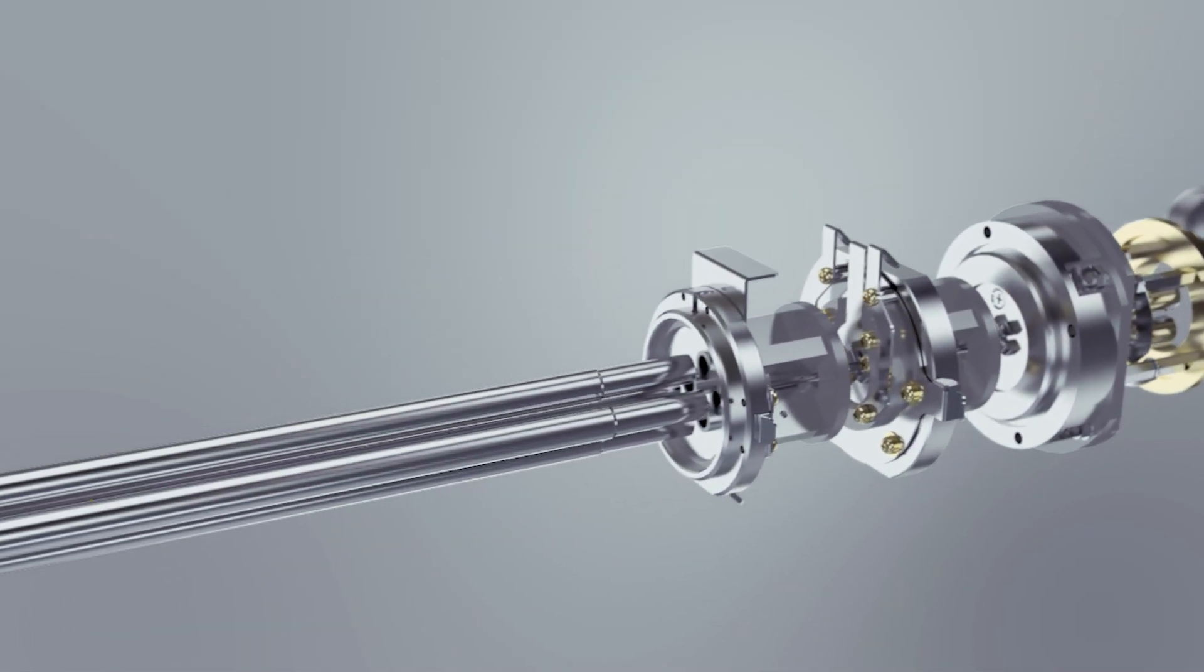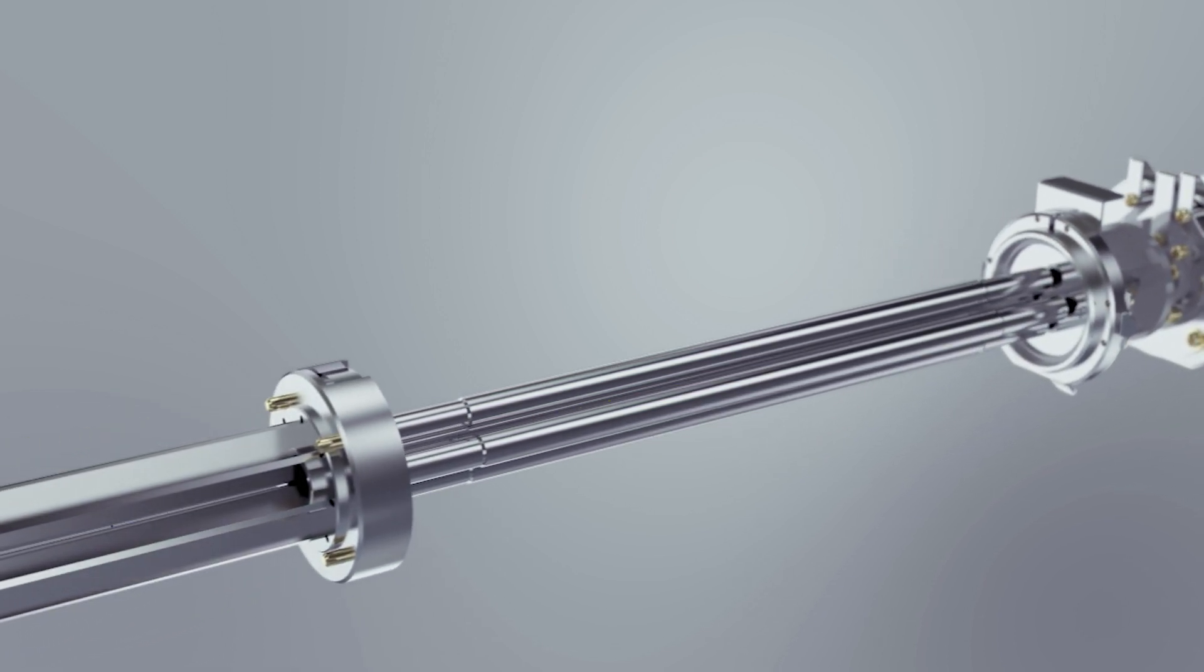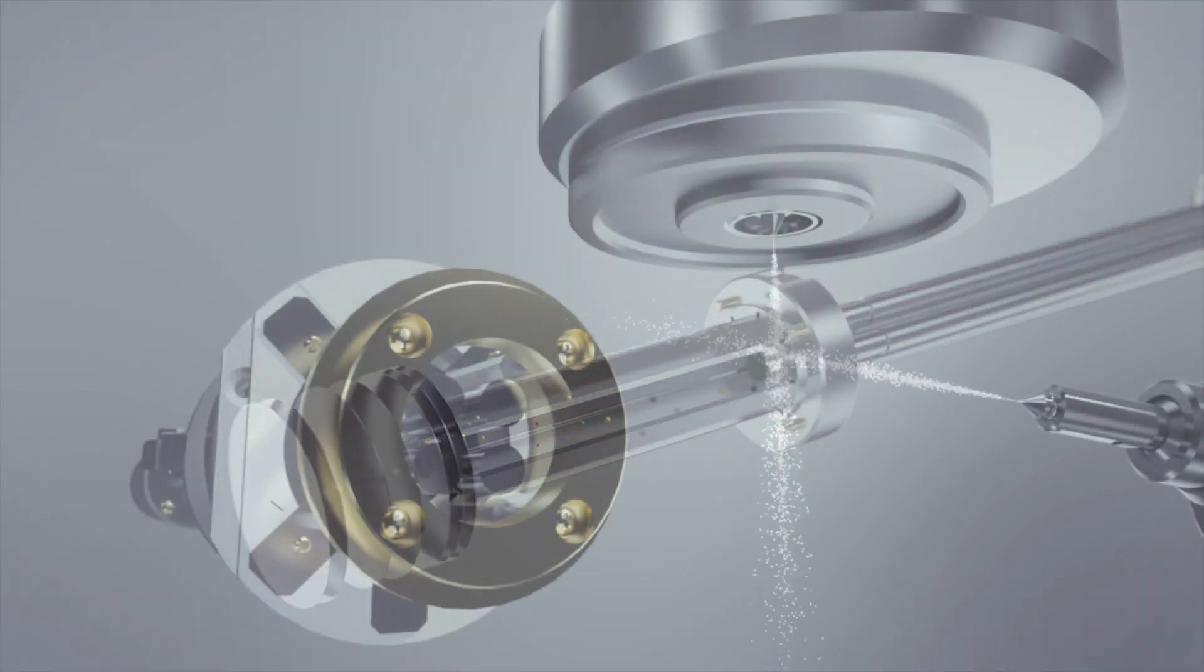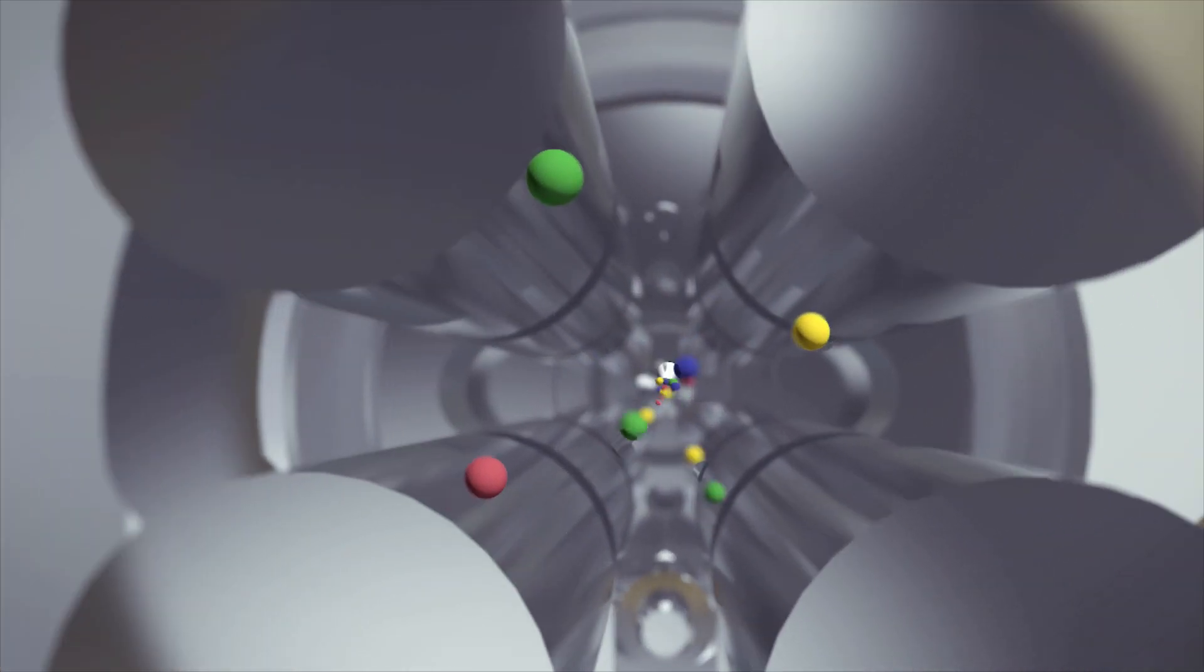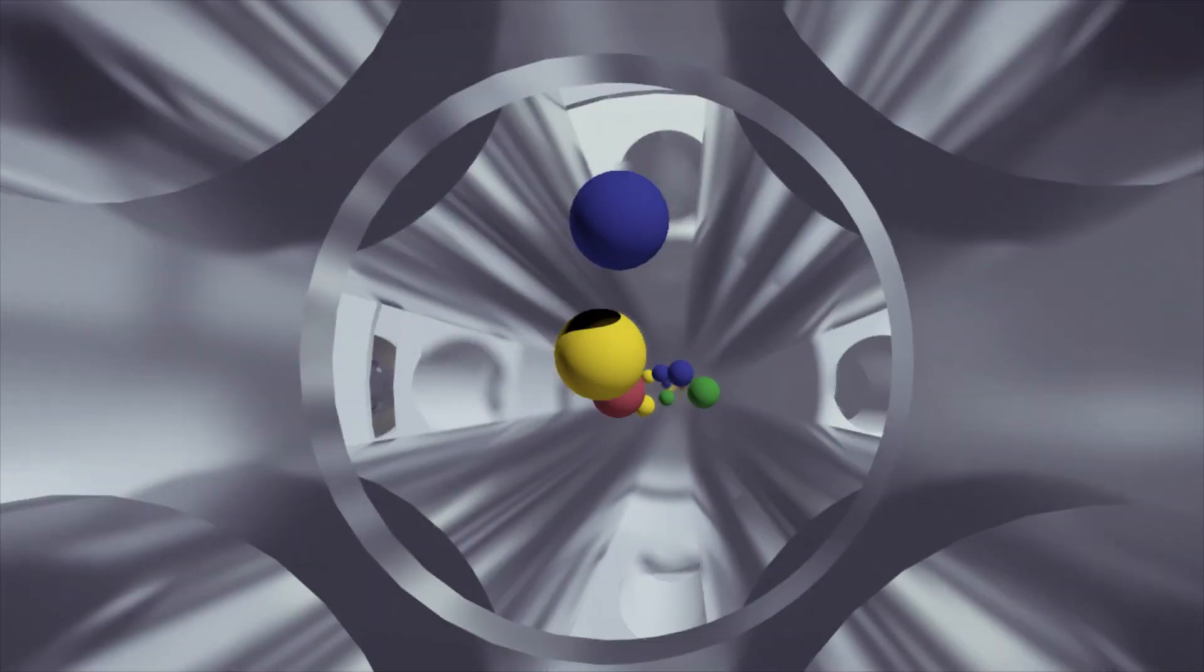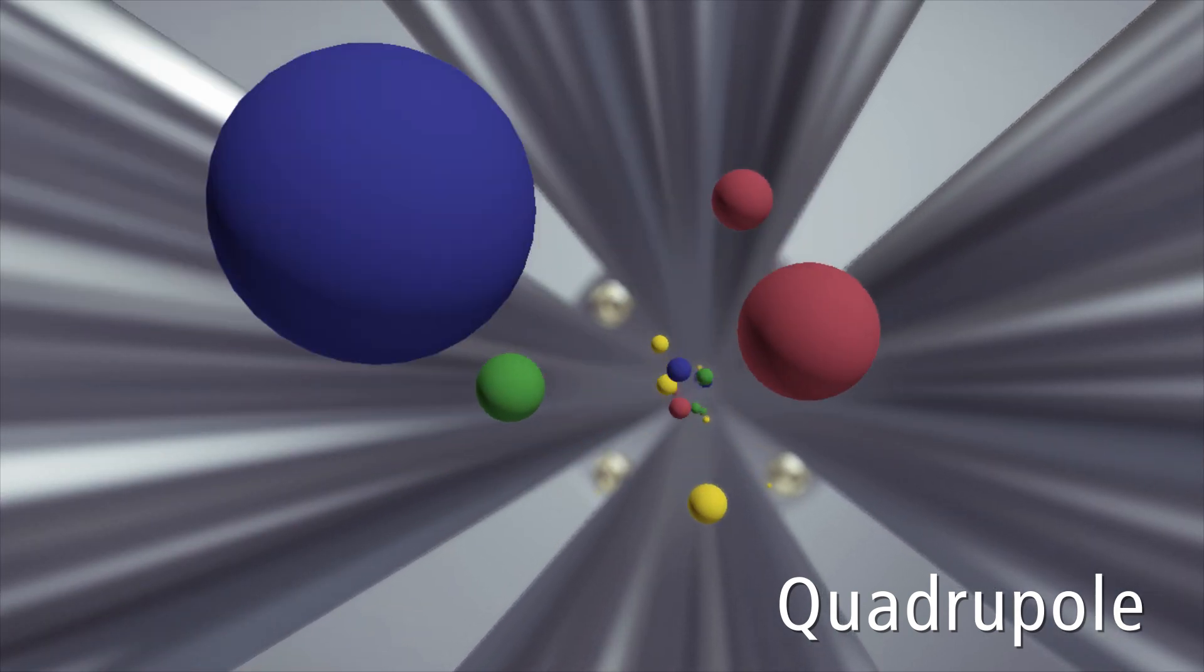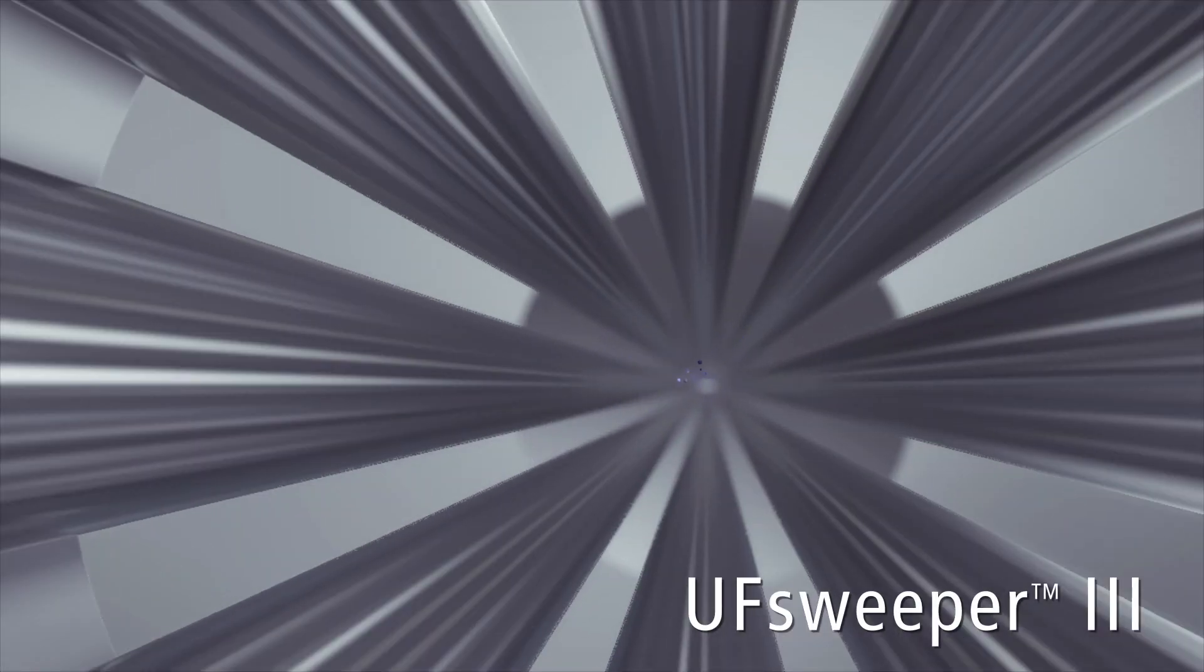The LC-MS 9030 builds on Shimazu's key technologies used in the world's fastest and highest sensitivity triple quadrupole mass spectrometer: the UF-Q array, true hyperbolic quadrupoles, and the UF-Sweeper 3.